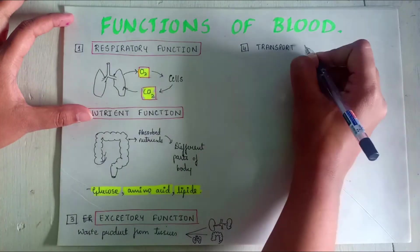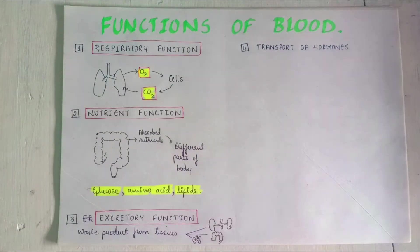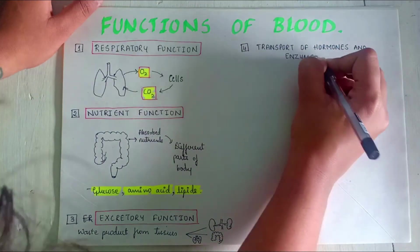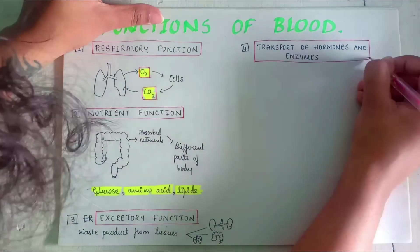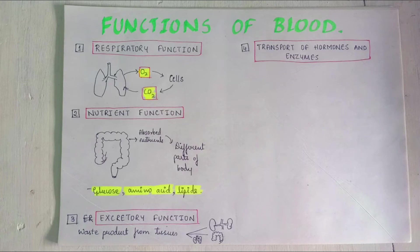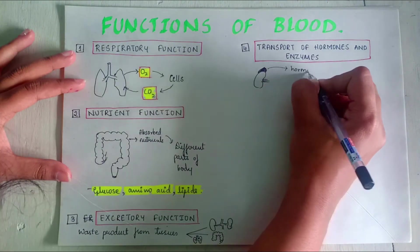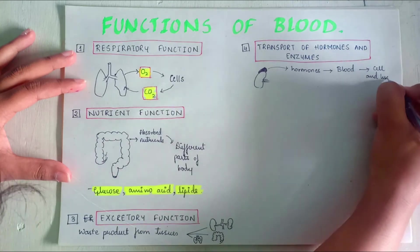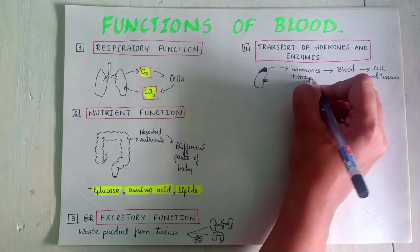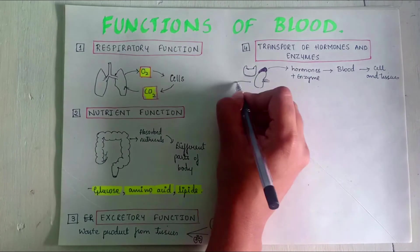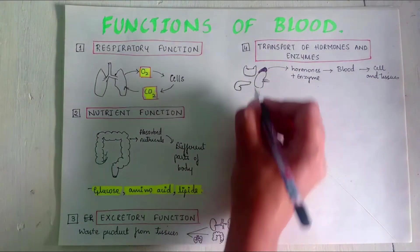Fourth function: Transport of hormones and enzymes. The hormones which are secreted by ductless glands are released directly into the blood. The blood transports these hormones to their target tissues and organs. Blood also transports the enzymes.